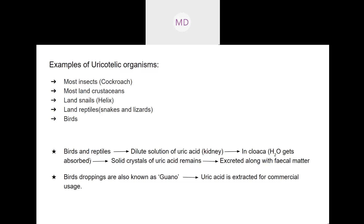In birds and reptiles, uric acid is formed in the liver. It then travels to the kidney, where it is found in a dilute watery solution. From the kidney it comes to the cloaca, where water gets absorbed. The solute — the uric acid — remains, because once the water is absorbed from the uric acid solution, only the uric acid remains. This forms the pellets that are excreted along with the fecal matter.